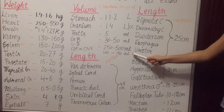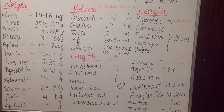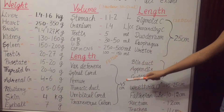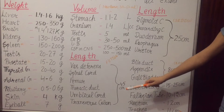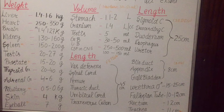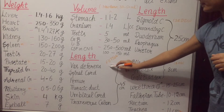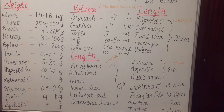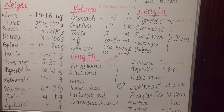Now we discuss length. The following structures have a length of 45 centimeter: femur, umbilical cord, transverse colon, spinal cord, and vas deferens. You can learn this by the mnemonic 'FOOT SVA' — F for femur, U for umbilical cord, T for transverse colon, S for spinal cord, V for vas deferens.